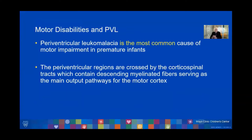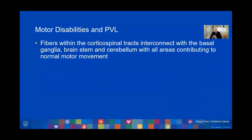PVL is the most common cause of motor impairment in premature infants. The periventricular regions are crossed by the corticospinal tracts, which contain descending myelinated fibers serving as the main output pathways for the motor cortex. Fibers within the corticospinal tracts interconnect with the basal ganglia, brainstem, and cerebellum, with all areas contributing to normal, purposeful motor movement.